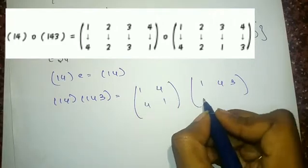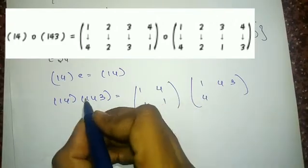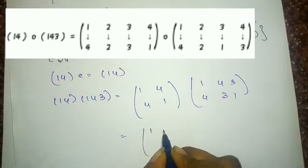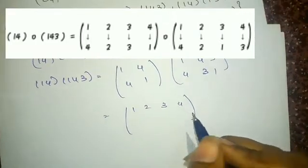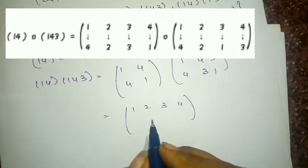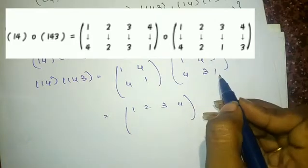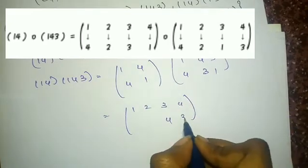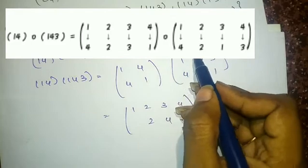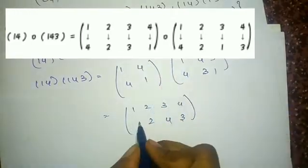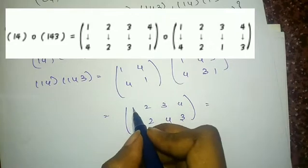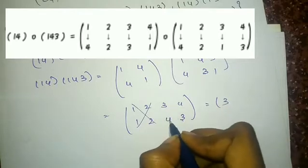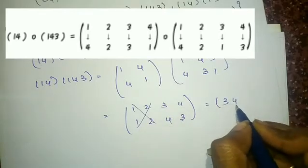For (14)∘(143): 1 is mapped to 4, 4 is mapped to 1, then 1 is mapped to 4 and 4 is mapped to 3, and 3 is mapped to 1. So working through 1,2,3,4: 3 is mapped to 1, 1 is mapped to 4, 4 is mapped to 3, and 2 is mapped to 2. Since 1 is mapped to 1 itself and 2 is mapped to 2 itself we ignore these two, giving us 3 is mapped to 4 and 4 is mapped to 3. The result is (34).